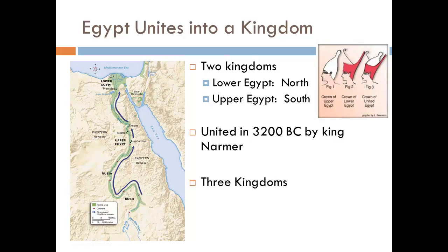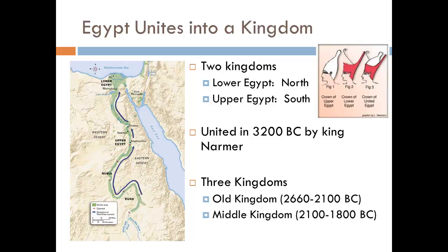In terms of its history, Egypt is split into three separate eras called kingdoms. The Old Kingdom is the most familiar — this is where we talk about the pyramids, the Sphinx, and early mummification, from about 2660 to 2100 BC. Later, Egypt was home to two other kingdoms: the Middle Kingdom and the New Kingdom. These came about because of different invasions. The Middle Kingdom ran from about 2100 to 1800 BC, and the New Kingdom from about 1800 to 1000 BC.